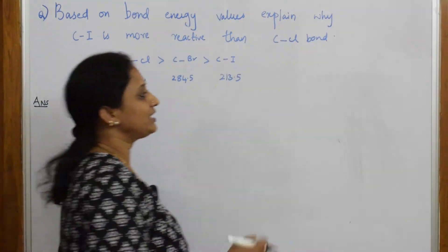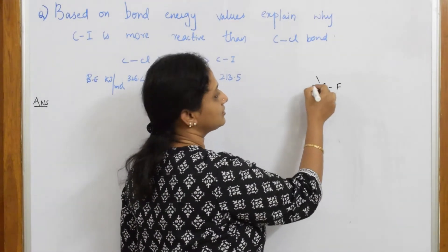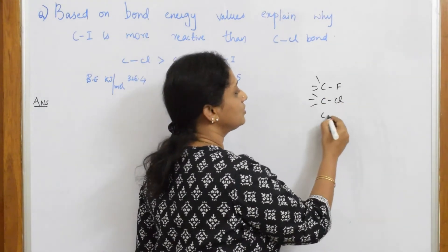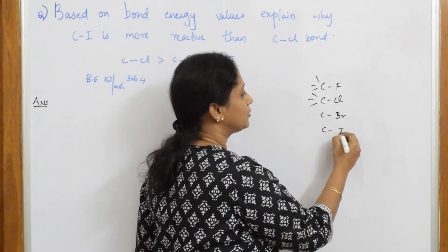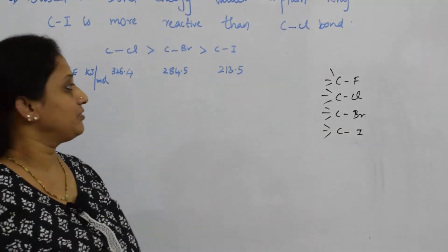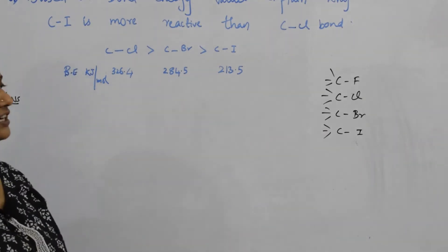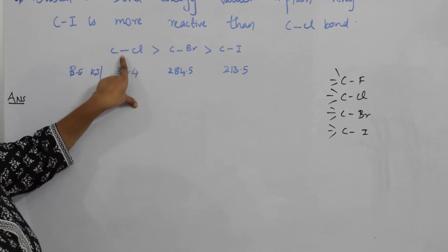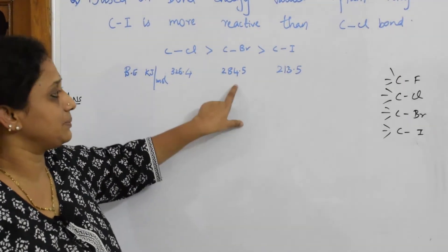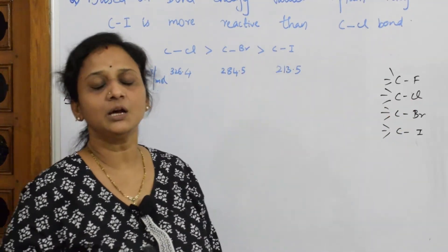Based on bond energy or bond enthalpy values, explain why CI is more reactive than CCl. As we know, when we write the series, first comes your CF, then fluorine, chloro, bromo, iodo. Now among all these, they've compared between these molecules and let me justify the answer. So below this they're given: CCl has maximum bond energy, then comes CBr, and the least is 213.5 for CI.